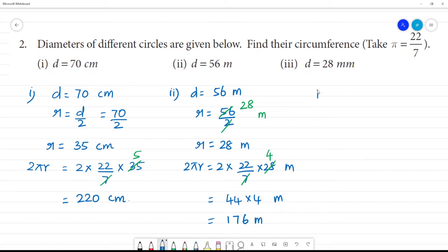Next, third one. Third one. So, diameter is equal to 28 millimeter. So, radius is equal to 28 by 2 millimeter. Then, what is 14 millimeter? Radius is 14 millimeter. Radius is 14 millimeter.